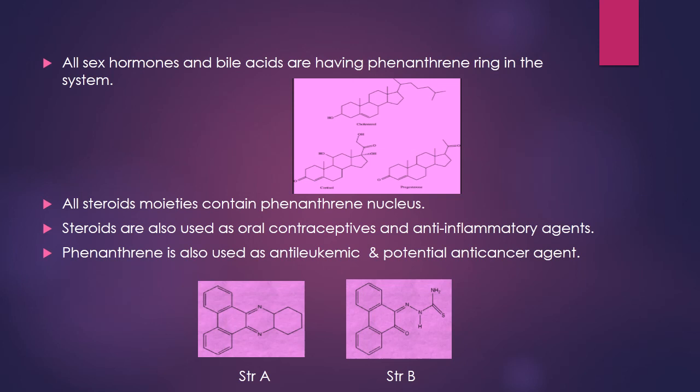The structures of cholesterol, cortisol, and progesterone are shown in the figure. All steroid moieties contain a phenanthrene nucleus. Steroids are used as oral contraceptives and anti-inflammatory agents, and since steroids contain a phenanthrene ring, phenanthrene can also be considered relevant to these applications. Phenanthrene is also used in anti-leukemic and potential anti-cancer agents, where structure A is anti-leukemic and structure B is an anti-cancer agent.